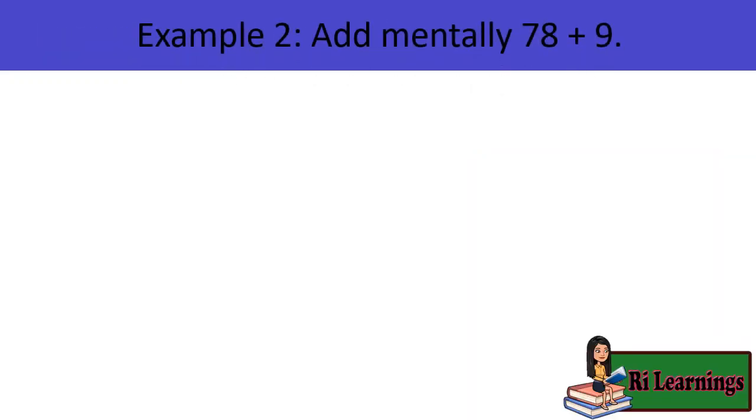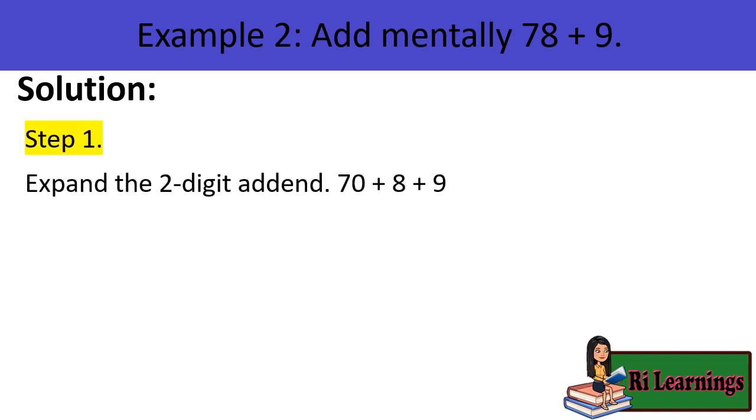Example 2: Add mentally 78 plus 9. Solution. Step 1, expand the two-digit addend. 78 will become 70 and 8, then we will have 70 plus 8 plus 9.